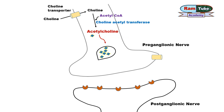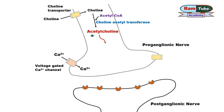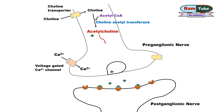When an action potential reaches the nerve terminal, it opens voltage-gated calcium channels, allowing calcium to enter the nerve endings. When sufficient calcium concentration is reached, it fuses with the presynaptic vesicles and, through exocytosis, acetylcholine is released into the synapse. This neurotransmitter release can be inhibited by botulinum toxin.